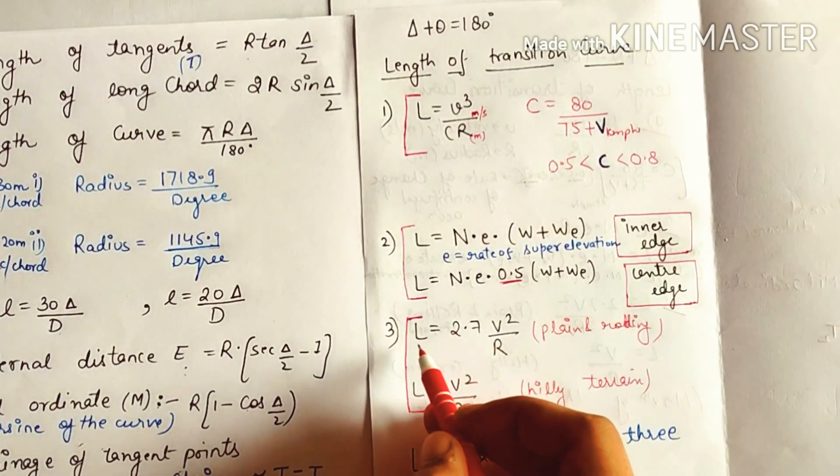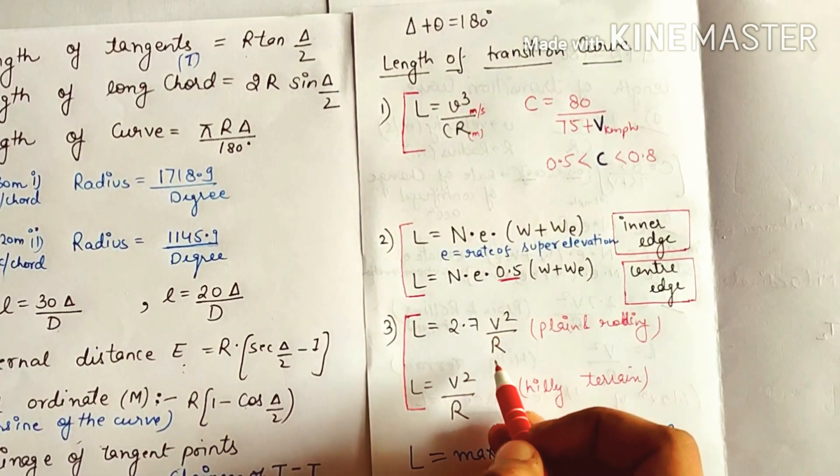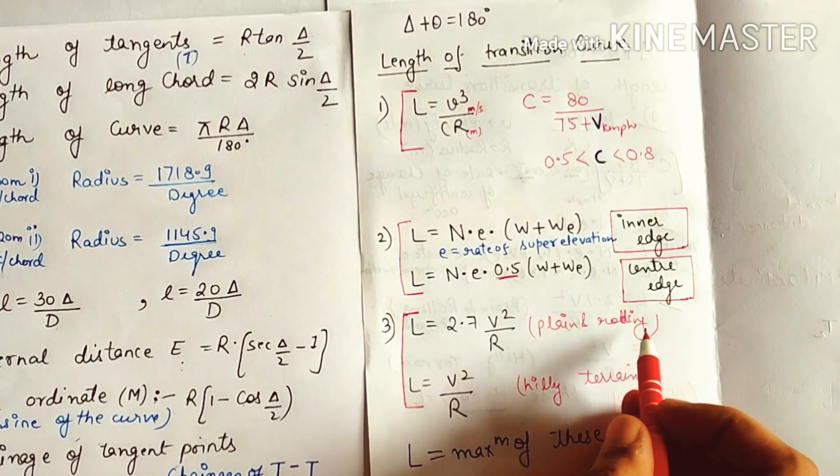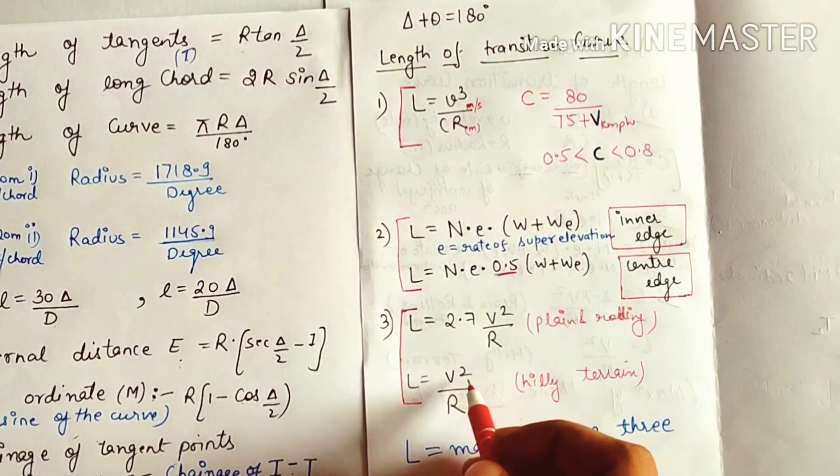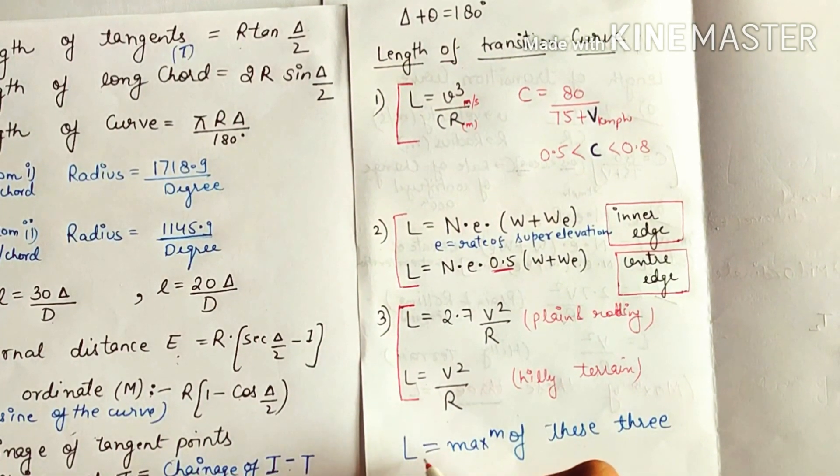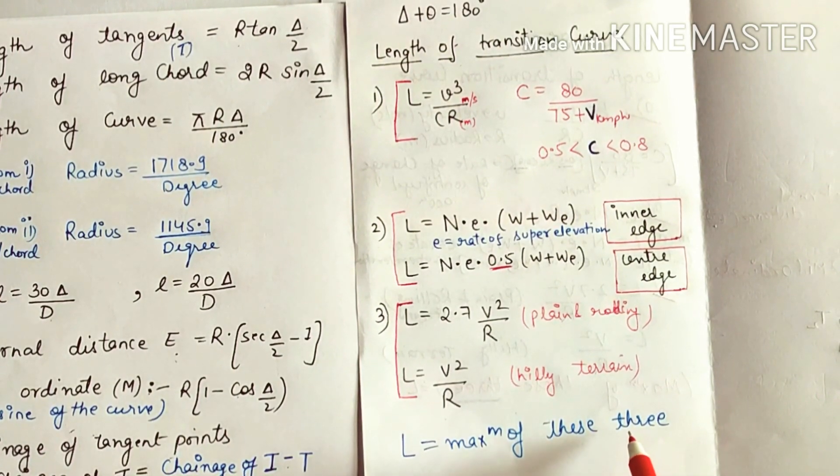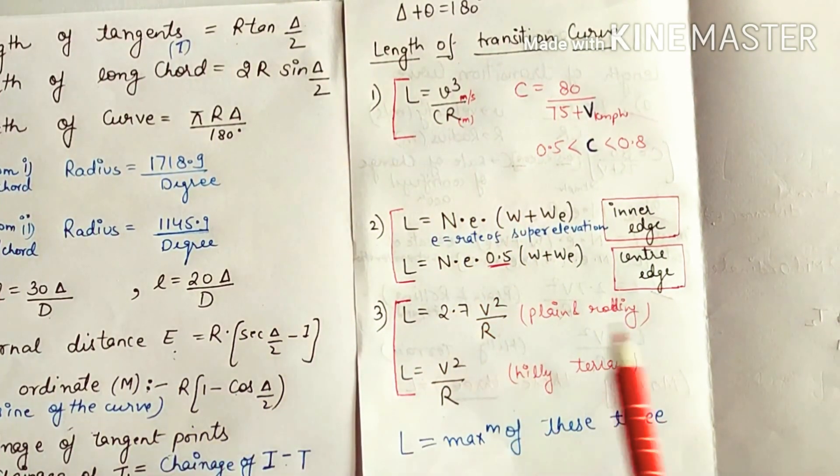By empirical formula: L = 2.7V²/R in plane and rolling terrain, L = V²/R for hilly terrain. L will be the maximum of these three values: first, second, and third. Okay?